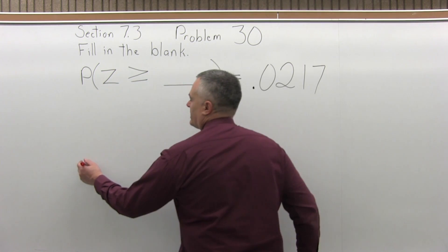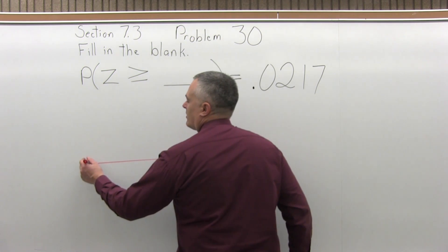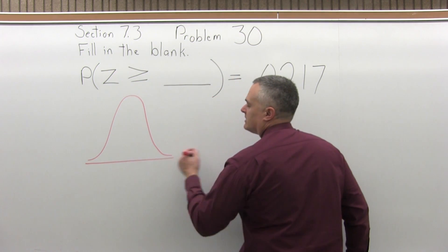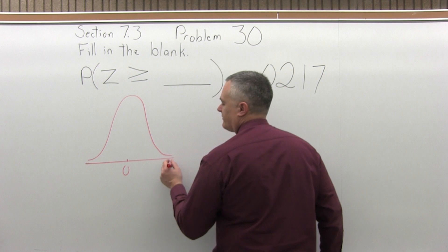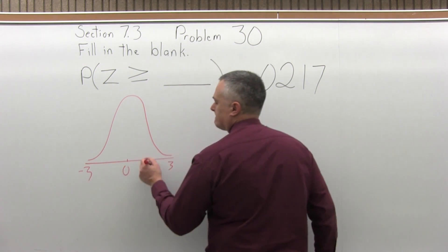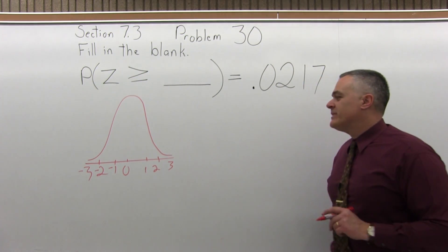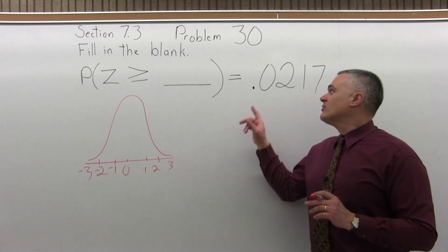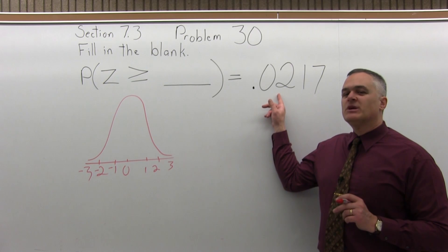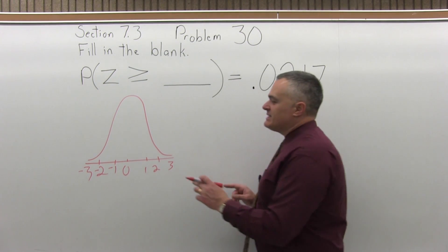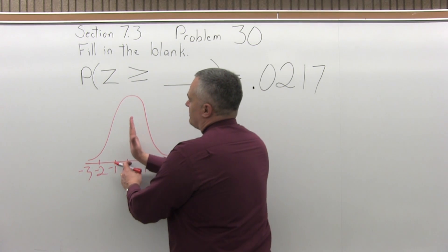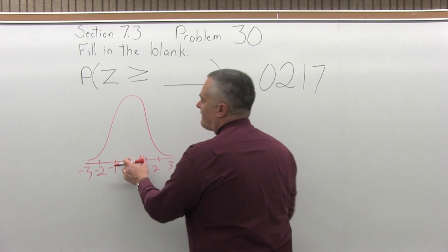Let's start this problem by drawing a picture of what we have. I'll start with a bell curve. There's some number and the probability of being greater than that number is .0217. If I start right in the middle, the probability of being greater than the zero in the middle is .5.